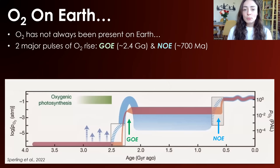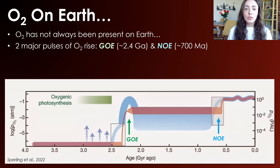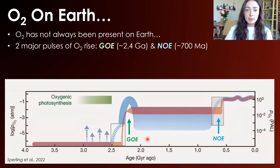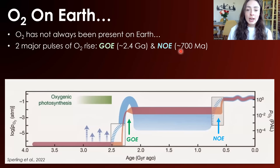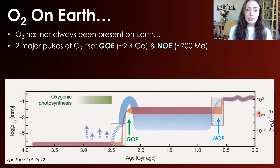Around 2.4 billion years ago began the rise of oxygen with what we call the Great Oxidation Event — the very first rise in atmospheric oxygen on Earth. And then later, we had the Neoproterozoic Oxygenation Event around 700-ish million years ago, where we had another pulse of oxygen rise that brought us to near-modern levels of oxygen in our atmosphere and oceans.